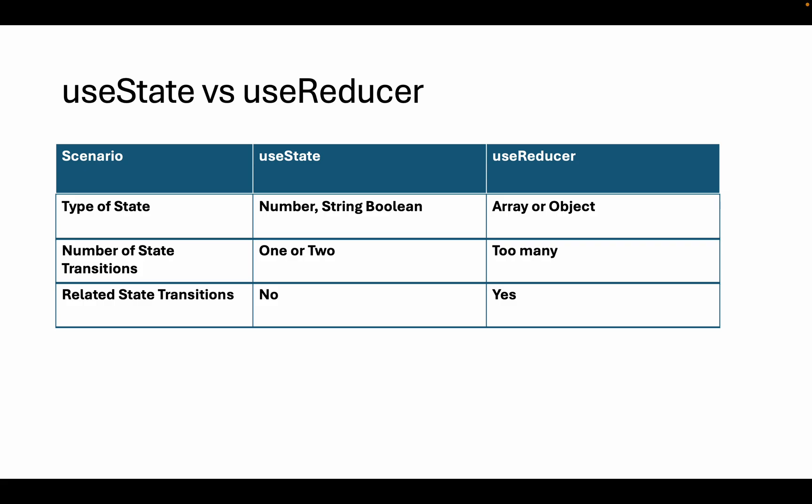Secondly, setting the post object in state or removing the post object from state, and the third one is setting an error to the error state or to an empty state. If you have to do one or two transitions, it's better to go with useState, but in case of many transitions it's better to go with the useReducer hook.